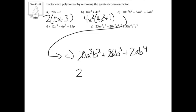Let's take a look at the a's: we've got a to the power of 3, a, and a — so the greatest common factor would be just a, since there's at least an a in each one. Then you've got b squared, b to the power of 3, and b to the power of 4 — there's at least a b squared here. So 10a to the power of 3 b squared divided by 2ab squared is going to be 5a squared.